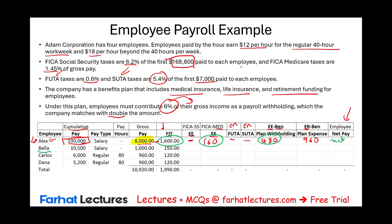Now Bella. Bella's cumulative pay so far is $10,500. Bella is a salaried employee with gross pay of $1,000 this period, and $150 was withheld for federal income tax. Since $10,500 is well below $168,800, Bella will pay Social Security at 6.2% times $1,000. She will also pay Medicare at 1.45%, and the employer will match both amounts. Would the employer pay FUTA or SUTA? No — Bella already exceeded the $7,000 limit, so the employer already paid that. Then $1,000 times 6% gives the employee benefit withholding; times 2 gives the employer contribution.